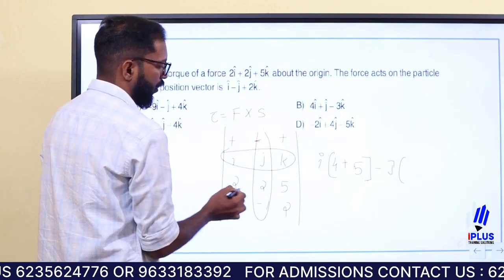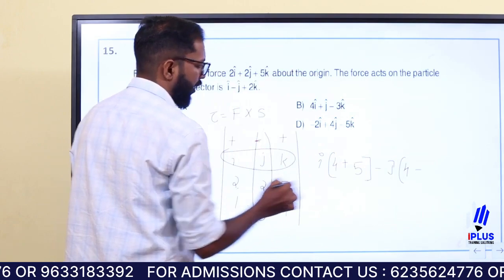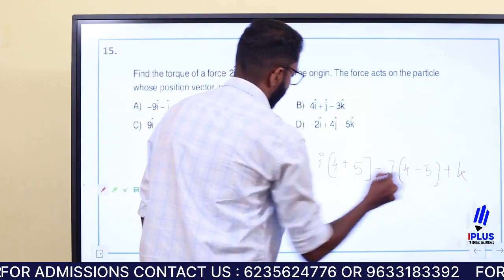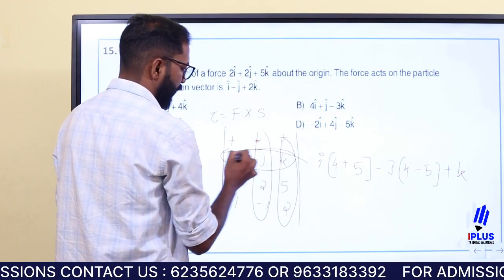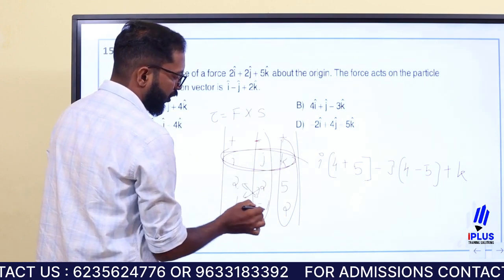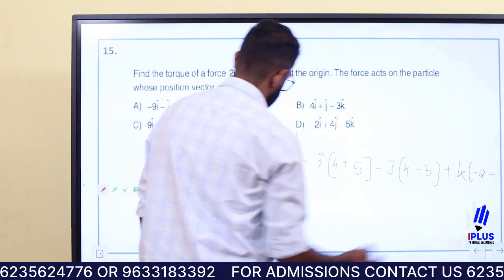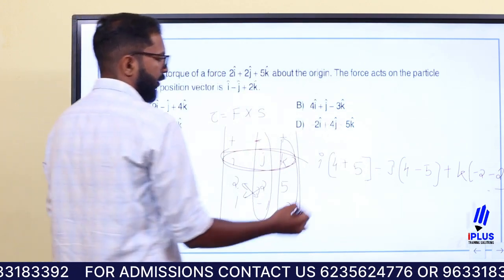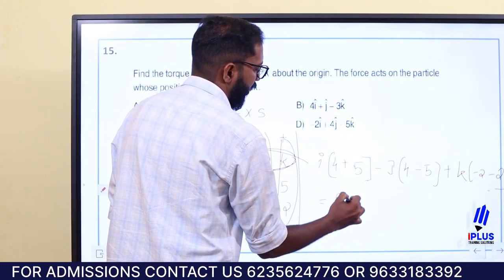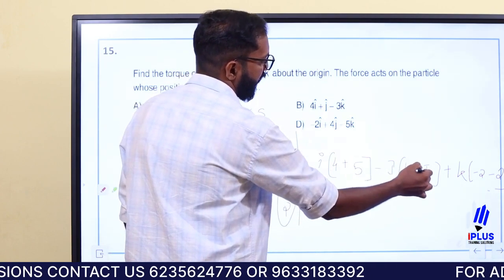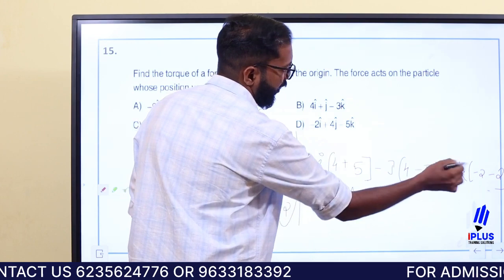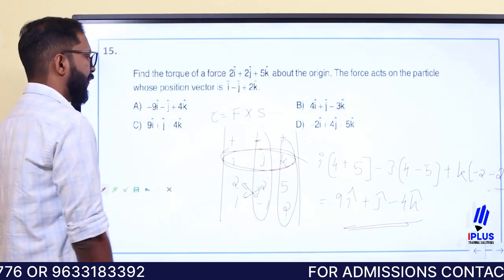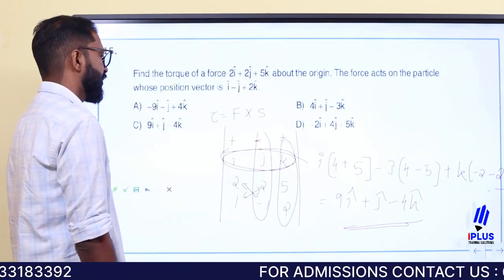Expanding the cross product: i component is (minus1 into 5 minus 2 into 2) equals minus5 minus 4 equals minus9, so 9i; j component is minus(1 into 5 minus 2 into 2) equals minus(5 minus 4) equals minus1, so plus j; k component is (1 into 2 minus minus1 into 2) equals 2 plus 2 equals 4, so minus 4k. Therefore torque equals 9i plus j minus 4k.